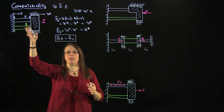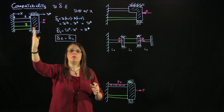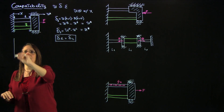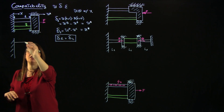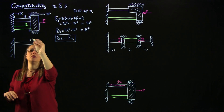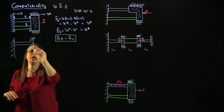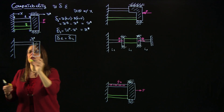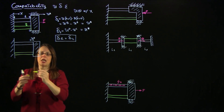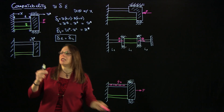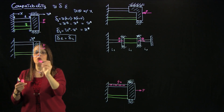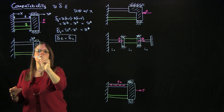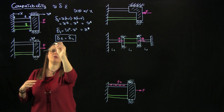Typically, when asked what compatibility tells you about this system: the bars are attached to a rigid block, so when the block displaces they must have the same elongation. Instead of going through the full discussion, you can also get to the same answer simply by saying: if the block displaces by u-star, the bars are attached to this block and must go along for the ride. By looking at the deformed shape of the structure, you can see that there is no other option — the two bars must elongate by the same amount.